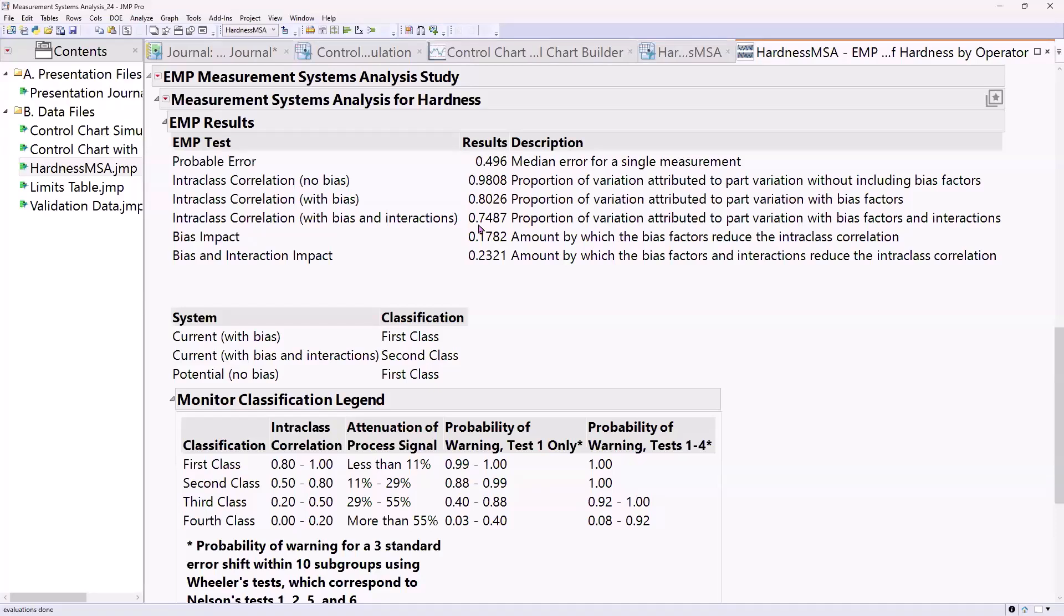If I include all those bias and the interaction between operator and part, I can see that 75% of the variation that I measured is associated with the part. However, that's, it's okay. I might want that to be better. The judgment based on that figure of merit is that this is a second class gauge.